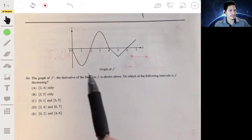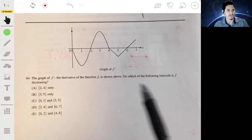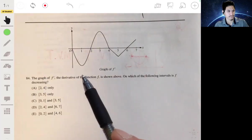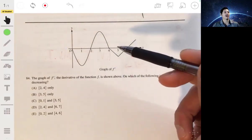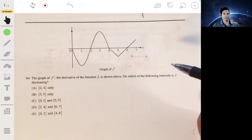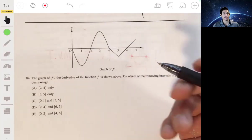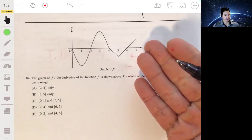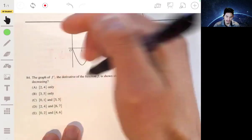Alright, 84. The graph of F prime, the derivative of the function F, is shown above. On which of the following intervals is F decreasing? Okay, so this is the graph of F prime. When we're looking for when it's decreasing, you literally just have to find where it's negative.